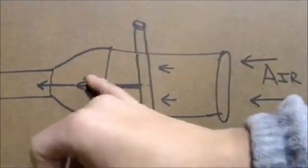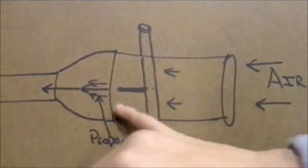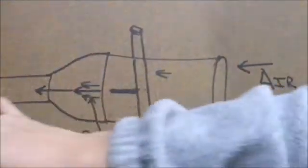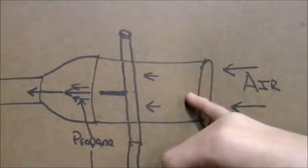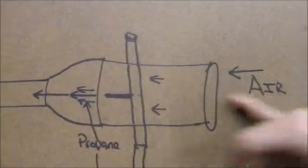So the propane shoots through here. It goes into the constriction, which creates a low pressure zone, which sucks air in the backside. And then the air and the propane go down this tube and are set on fire. And that is the Venturi effect.